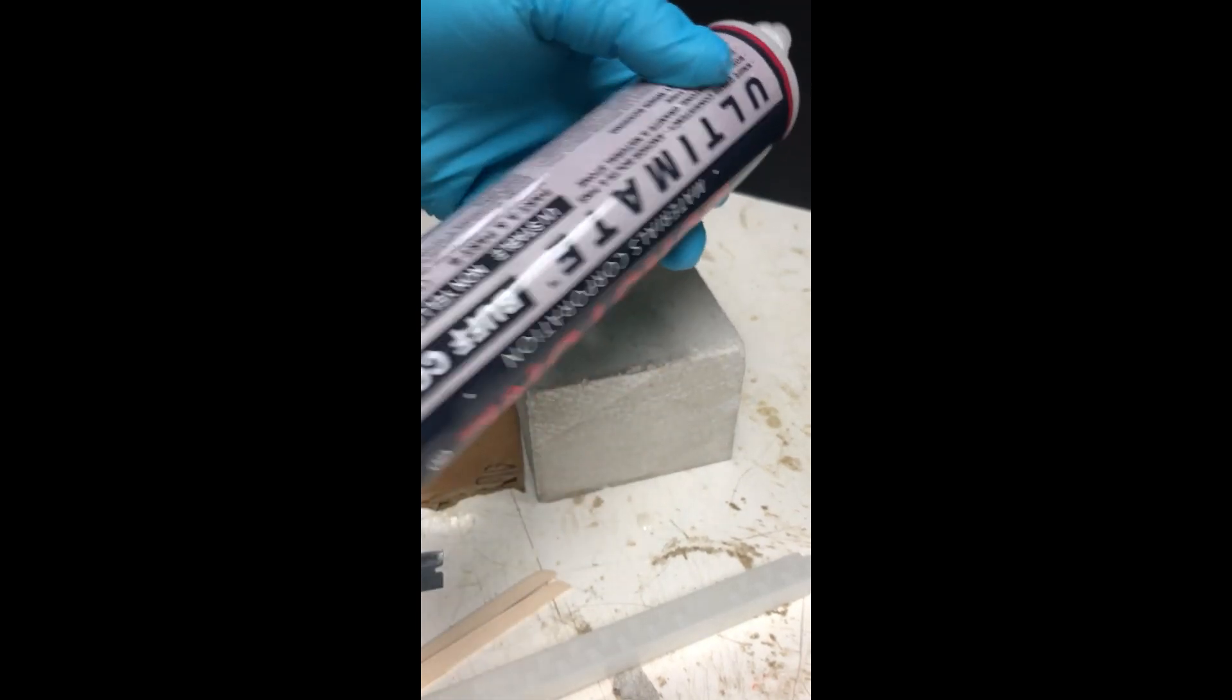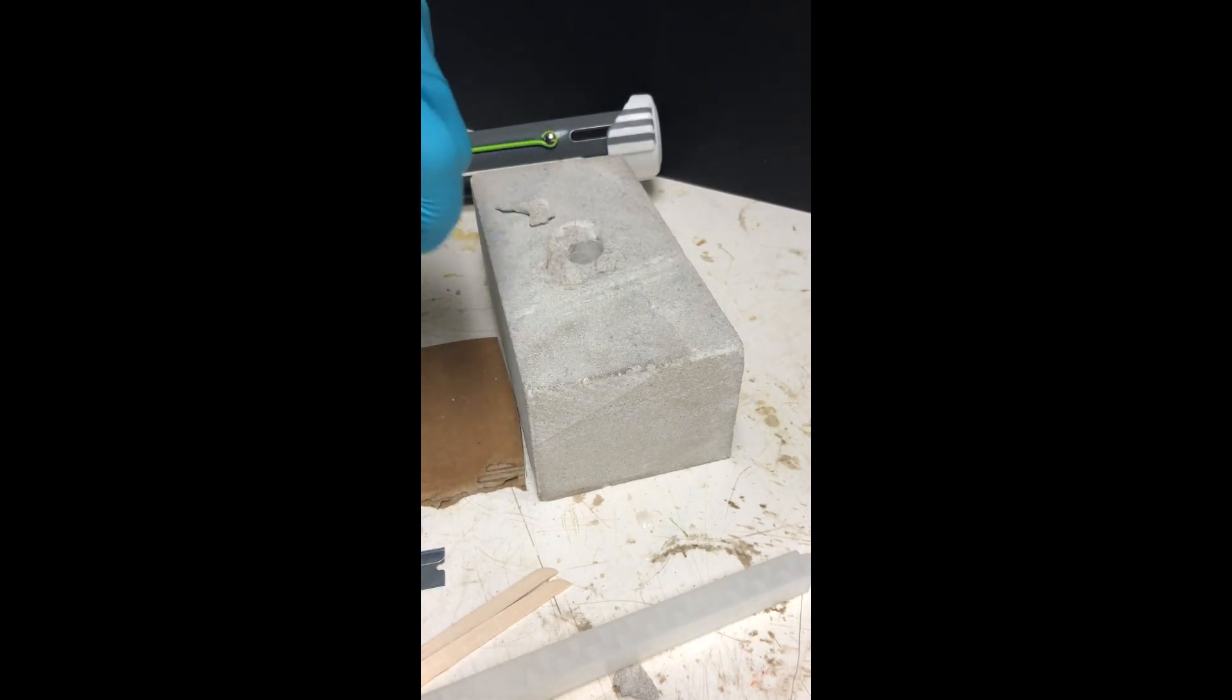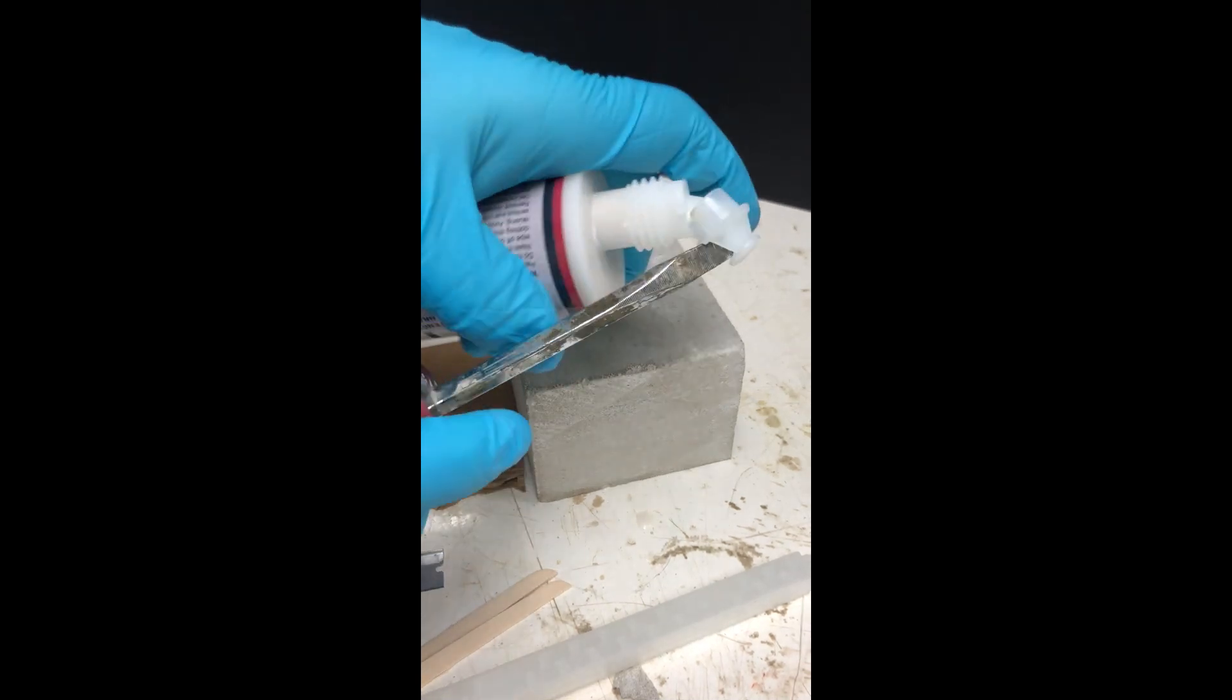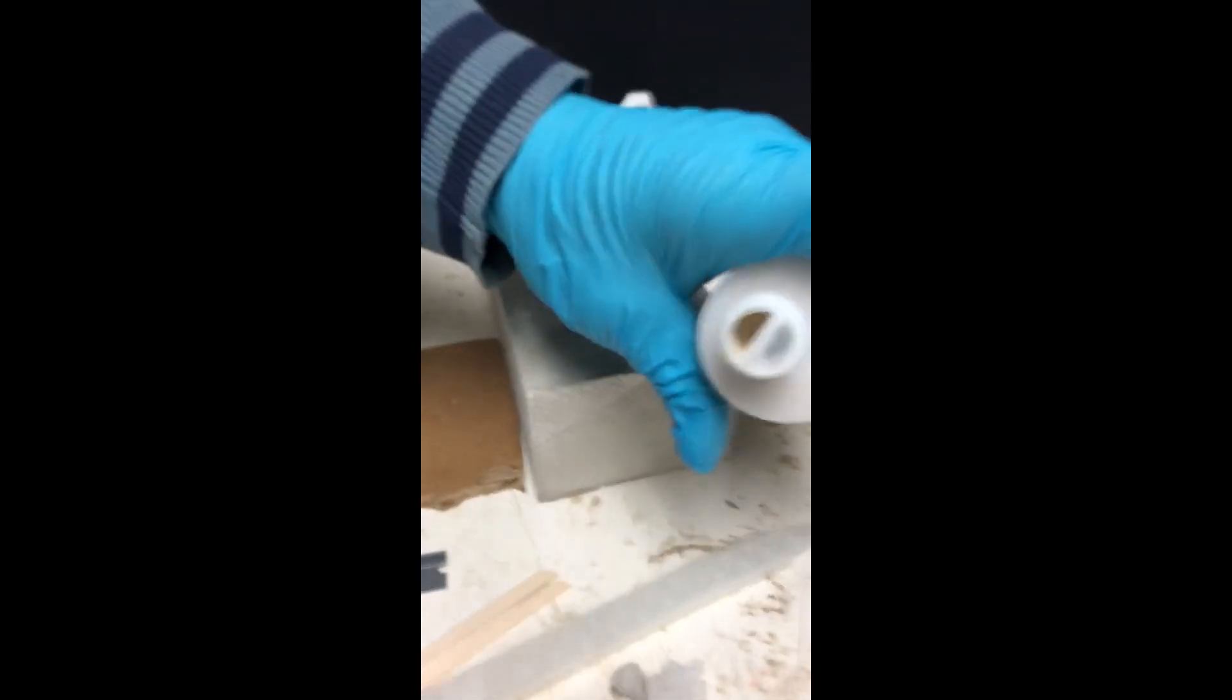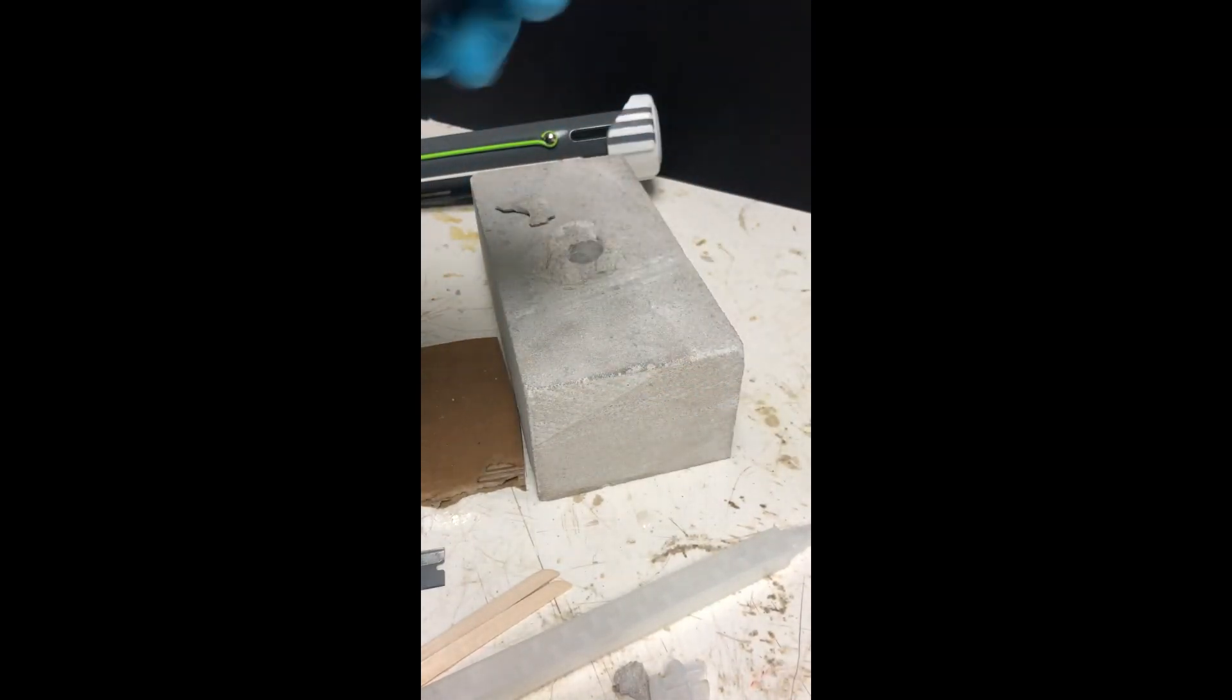These tubes, this two-part system, goes right in a standard caulk gun. First you have to remove the tip on it. As you can see, you have both parts in there, A and B. A is the colored part of the system.